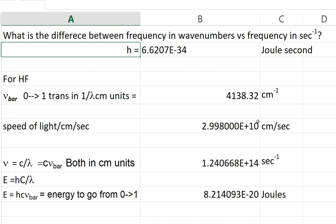Wavenumbers and frequency in seconds to the minus one. To get the energy to go from the zero to one state of hydrogen fluoride, the zero to one vibrational state, you take h nu, and nu would be c nu bar.